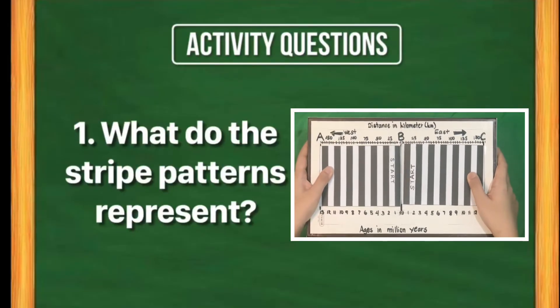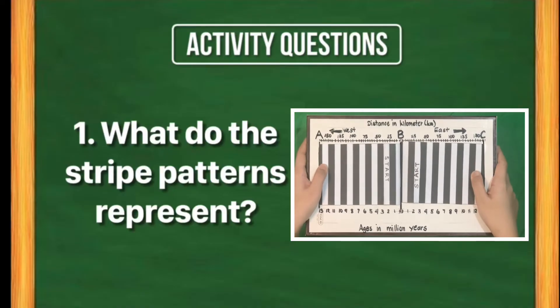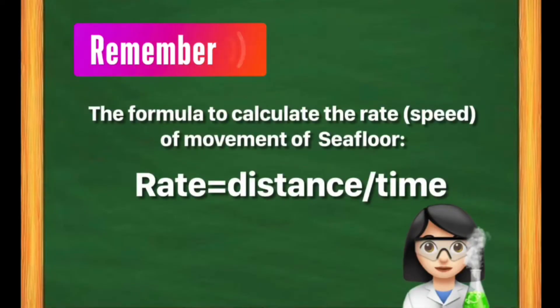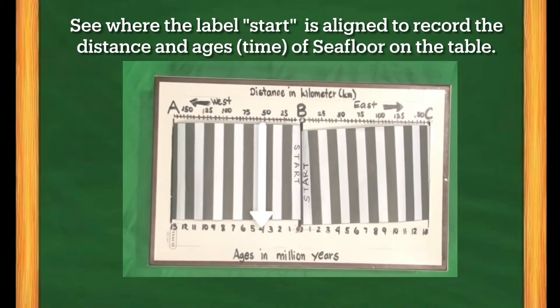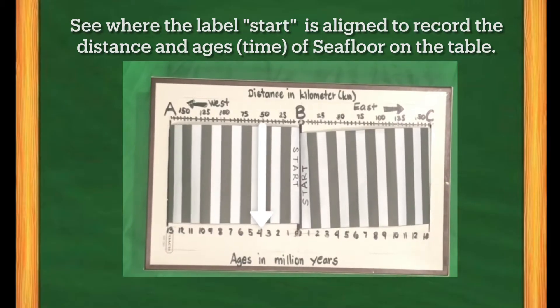Activity Question 1: What do the stripe patterns represent? Copy the table below on a piece of paper. Observe the demo activity to complete the table. Remember the formula to calculate the rate or speed of movement of seafloor: rate is equal to distance divided by time. See where the label 'start' is aligned to record the distance and ages or time of seafloor on the table. Observe the following values.